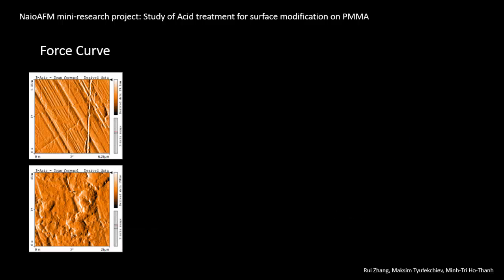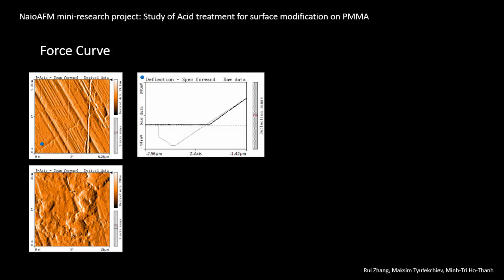Then we measure the force curves on each sample. For the untreated sample, we carry out the force curve measurement on a relatively flat surface. For the treated sample, we notice that there are both flat surfaces and some features on its surface, so we carry out the force curve measurement on both of them.